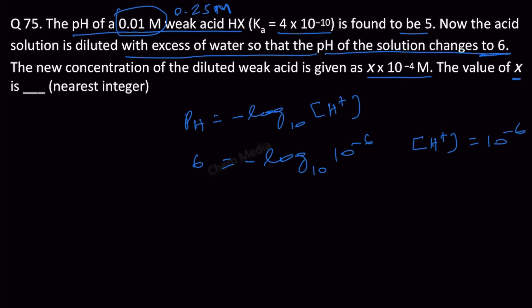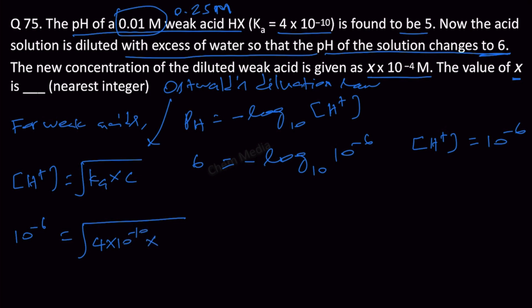Now, for weak acids, as per Oswald's dilution law, we know that H plus ion concentration is equal to square root of Ka times C. So therefore, 10 to the power minus 6 is equal to square root of 4 times 10 to the power minus 10 times C. So if we square it on both sides, then it would become 10 to the power minus 12 equal to 4 times 10 to the power minus 10 times C.